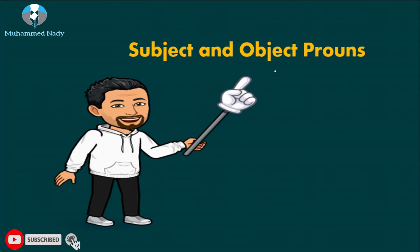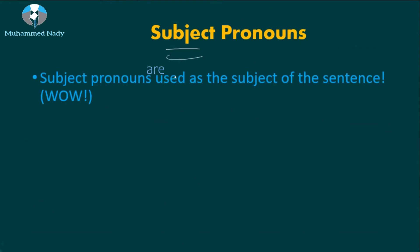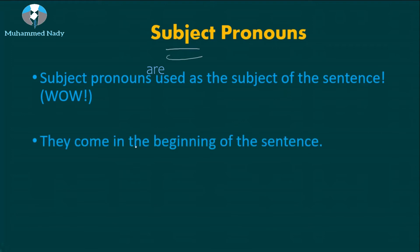Subject and object pronouns — this is our lesson today. Let's start with the subject pronoun. Subject pronouns are used as the subject of the sentence. It's very easy: subject pronouns always come at the beginning of the sentence. So if you're searching for the subject pronoun, search at the beginning of the sentence. Take care — I said the beginning of the sentence, not the beginning of the line.